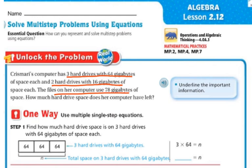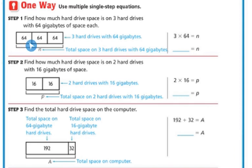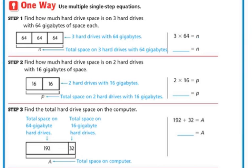Let's underline the important information. We know she has three hard drives with 64 gigabytes, two hard drives with 16 gigabytes of space each, and the files on her computer use 78 gigabytes of space. One way to solve this is to find out how much space is on three hard drives with 64 gigabytes. We have three times 64 to find what n is.